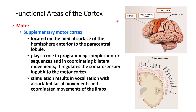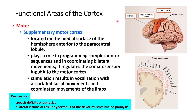If there is damage to the supplemental motor area, you can get aphasia — a problem with speech — and also increased tone of the flexor muscles, but not paralysis. The reason there is no paralysis is that other fibers from the primary motor cortex and premotor cortex are still going down, so those areas compensate. You will not get paralysis but may get increased flexor muscle tone.